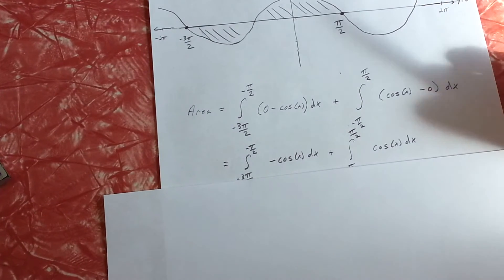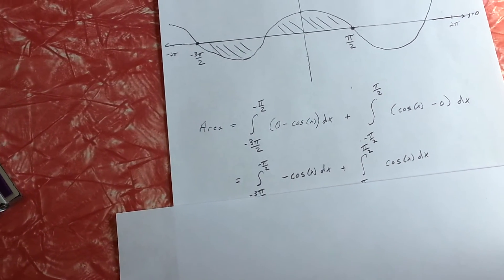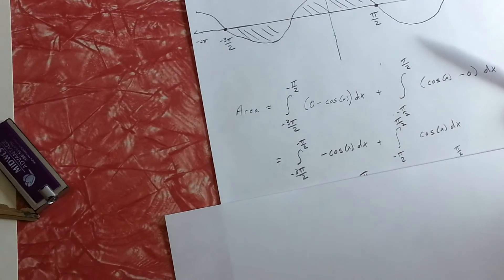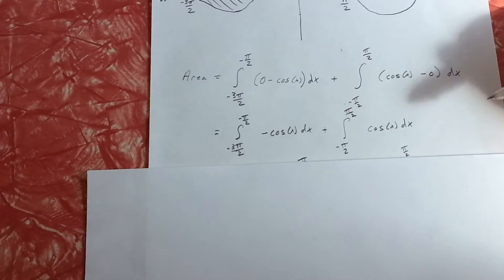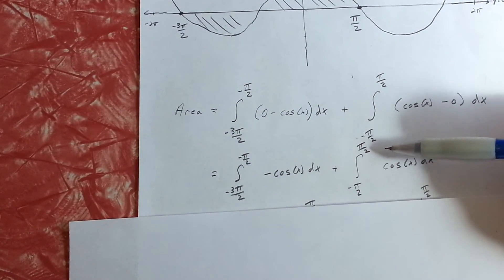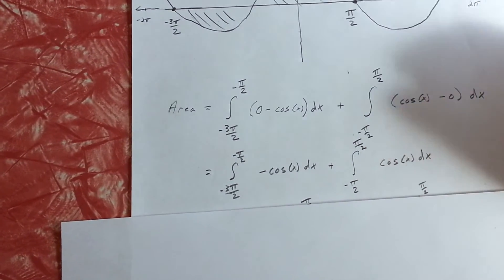So we come up with the integral of negative cosine of x dx between negative 3 pi over 2 and negative pi over 2, and also the integral of cosine of x between negative pi over 2 and pi over 2.